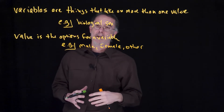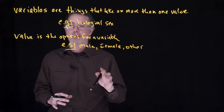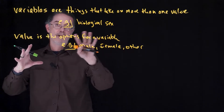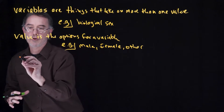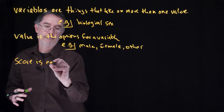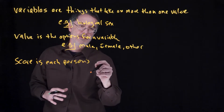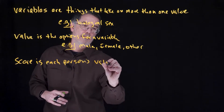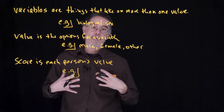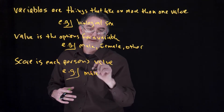These are all within a specific data set. When you are collecting your data and measuring each person, or whatever it is that you are observing, each individual will have their own value, and the individual's value is called their score. Each person or observation has a score. For example, my biological sex is male, so my score is male.